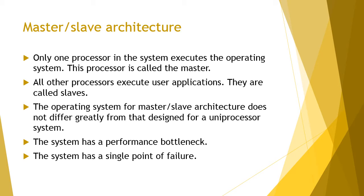In master-slave architecture, only one processor executes the operating system — this is called the master. All other processors execute user applications and are called slaves. The OS for master-slave architecture does not differ greatly from that designed for a uniprocessor system.